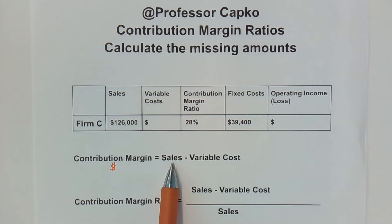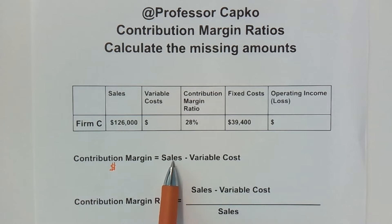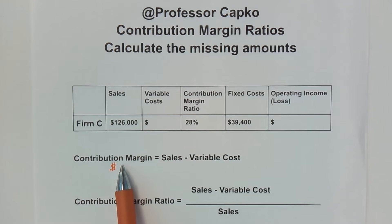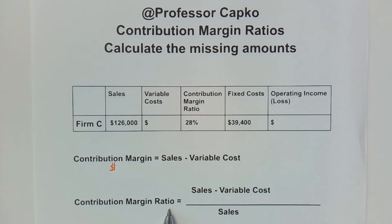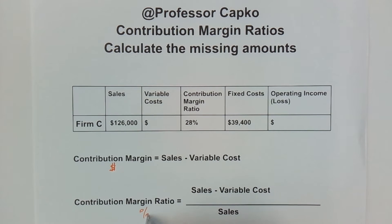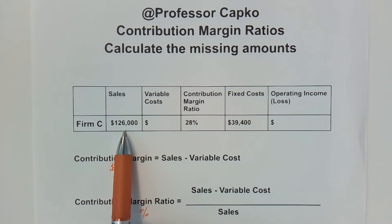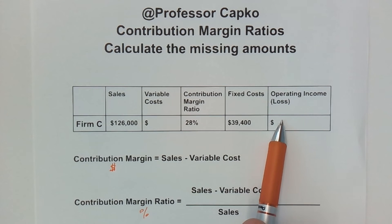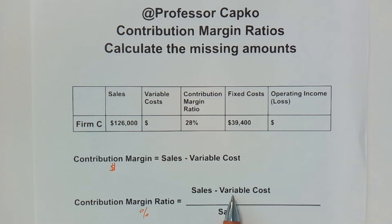We'll have sales in dollars, subtract variable costs in dollars, and that gives us contribution margin in dollars. That's opposed to the contribution margin ratio, which is a percentage — the percentage of sales that go toward covering operating income. The formula is: contribution margin ratio equals sales minus variable costs, all over sales.